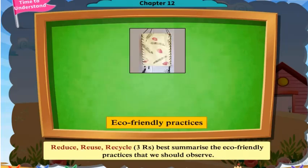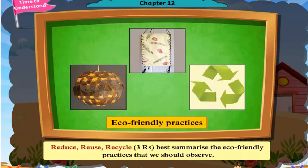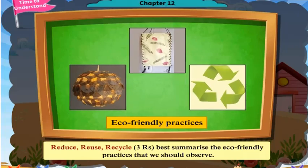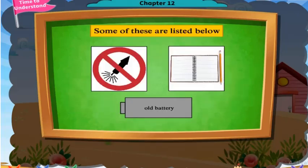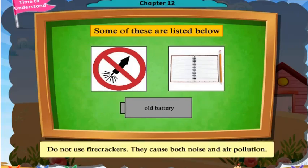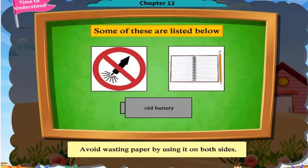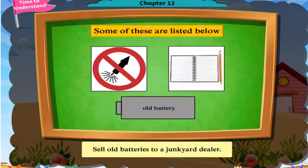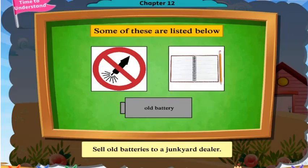Reduce, reuse, recycle. These three R's best summarize the eco-friendly practices that we should observe. Some of these are: do not use firecrackers, as they cause both noise and air pollution. Avoid wasting paper by using it on both sides. Sell old batteries to a junkyard dealer.